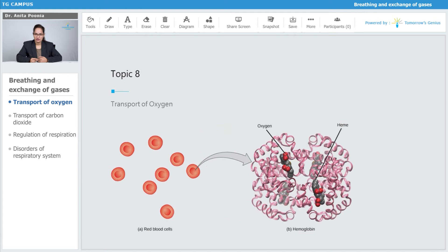The transport of oxygen: this is a heme group, this is the hemoglobin molecule, and this is the oxygen that you can see very clearly over here. This is the oxygen and this is the red blood cell.